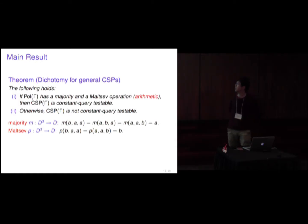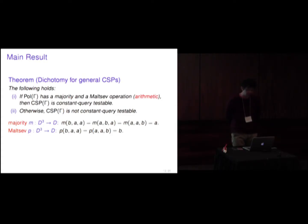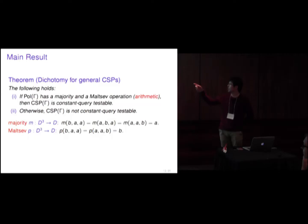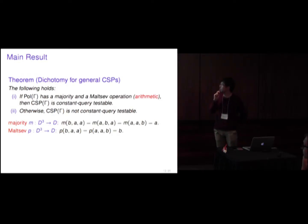Our main result can be stated as follows. If Pol(gamma) has both a majority operation and a MATEF operation — which together form the arithmetic condition — then CSP(gamma) is constant query testable. Otherwise, CSP(gamma) is not constant query testable. Here, majority outputs A when the arguments are (B, A, A), (A, B, A), or (A, A, B). And the MATEF operation outputs B when the argument is (B, A, A) or (A, A, B), but does not impose any constraint when the argument is (A, B, A) — it is like minority but without the middle constraint.